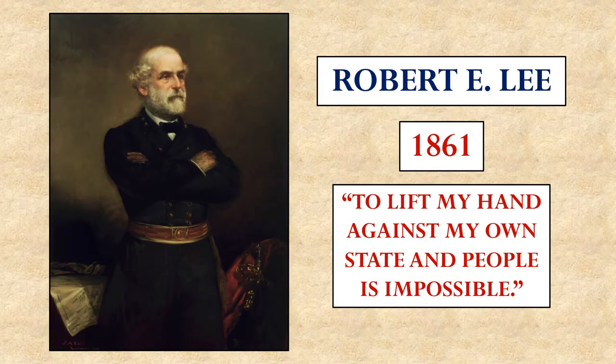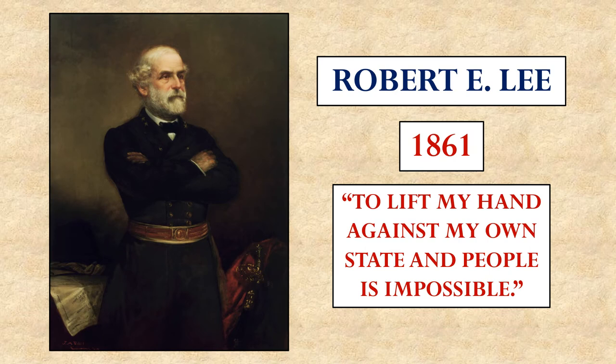But who would command these 75,000 troops? Lincoln offered the command of the U.S. Army to Robert E. Lee. Robert E. Lee was a colonel who would have been elevated to general. He was considered a military tactician of great renown — a great leader of troops. He is the one that had captured John Brown at Harper's Ferry. Robert E. Lee turned down the opportunity. He was from Virginia, and even though he didn't think the southern states should be seceding, he said he could not lift his hand against his own state and his own people. So he resigned his commission in the U.S. Army and would eventually become the leader of the Confederate troops.